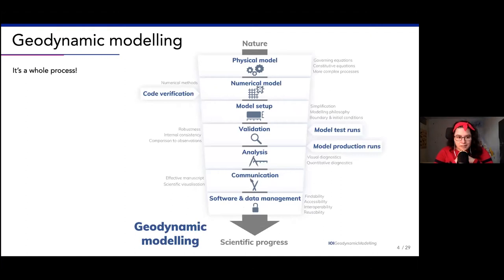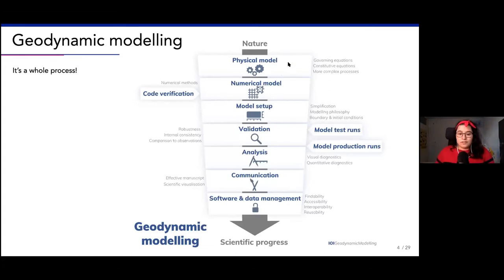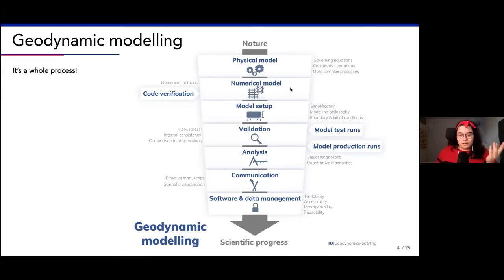That is why a lot of people turn to modeling - using physics, computers, and mathematical models to say something about what happens at depth. And that is how we get to the process of geodynamic modeling. Because we do want to know something, we cannot get direct observations, so maybe models can help us out. Geodynamic modeling is a whole process - you start out with nature, something interesting that you observe.